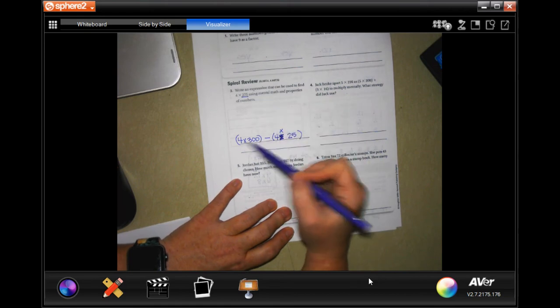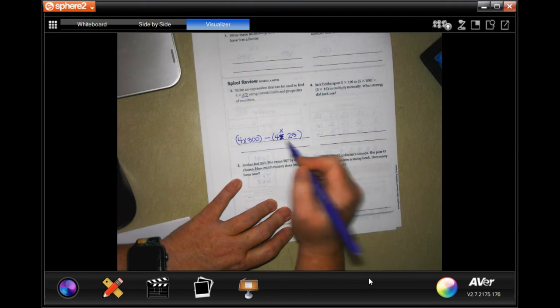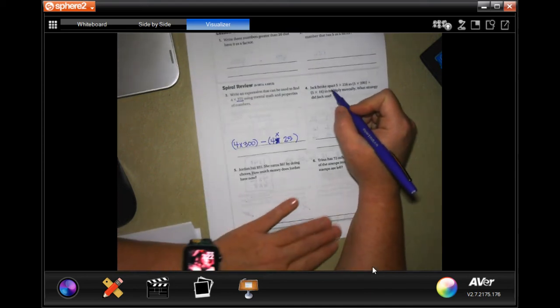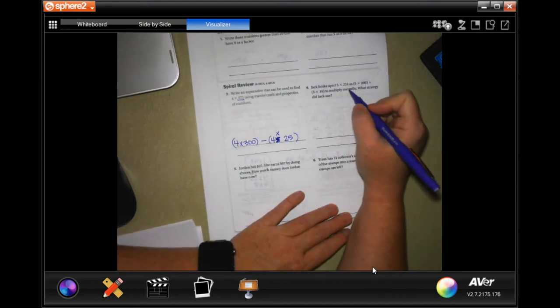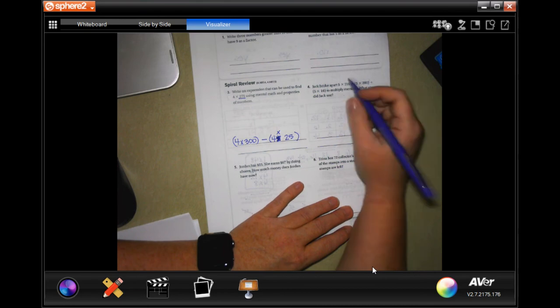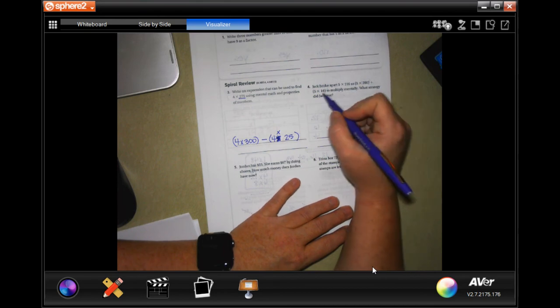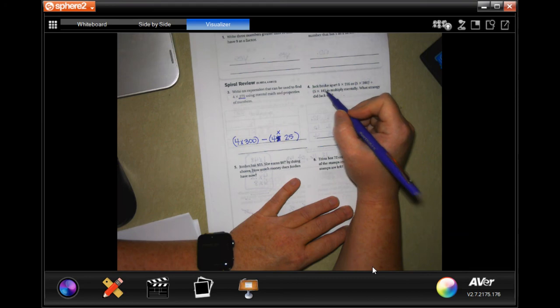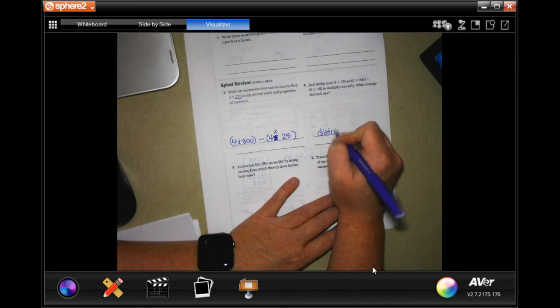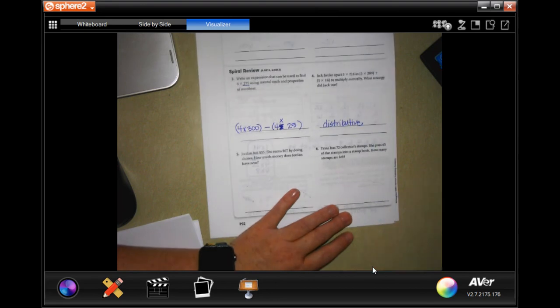So, I multiply four times 300. And I'm going to subtract four times that 25. So, that would be your whole expression. All right. Jack broke apart five times 216. It's five times 200 and five times 16 to multiply mentally. What strategy did he use? Well, he broke up 216 into 200 and 16. And then, he multiplied the five onto both of those. That's the distributive property.